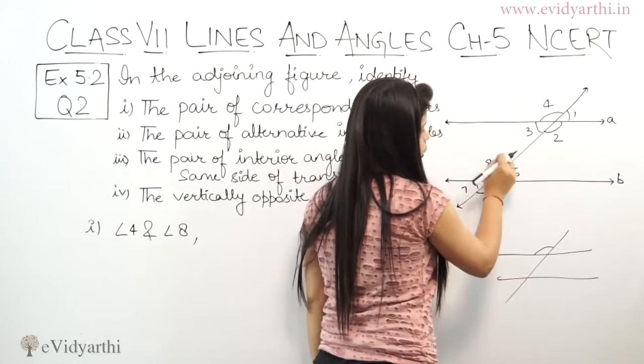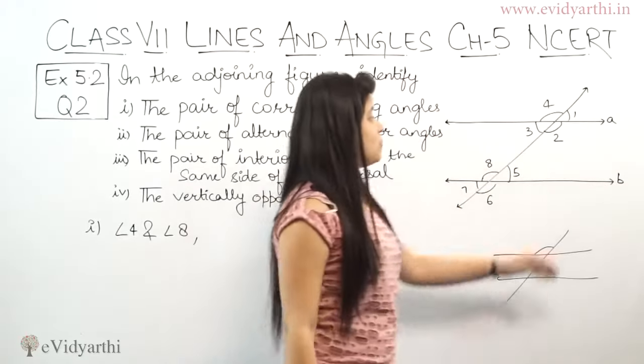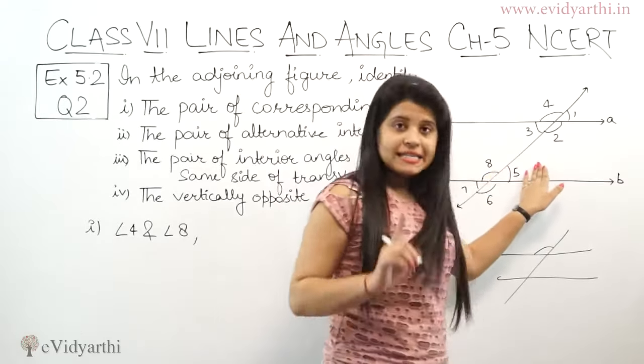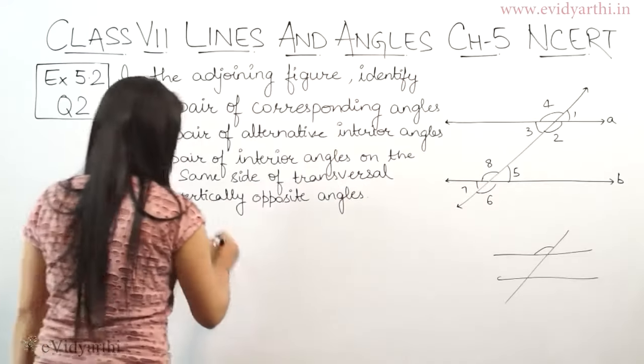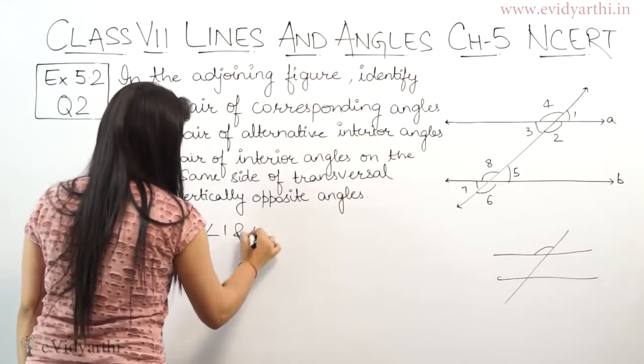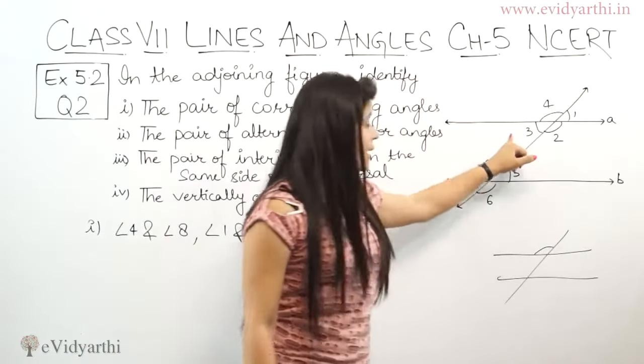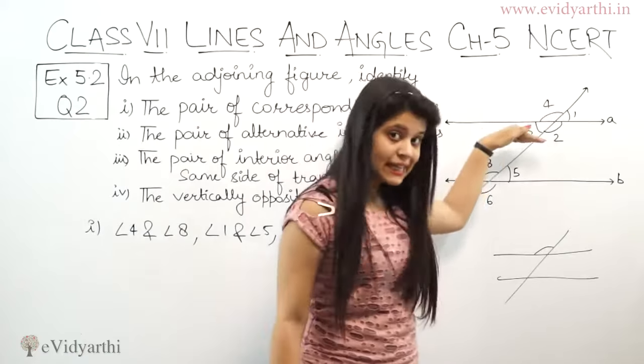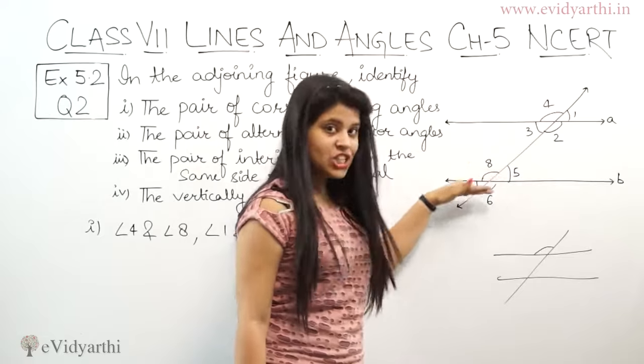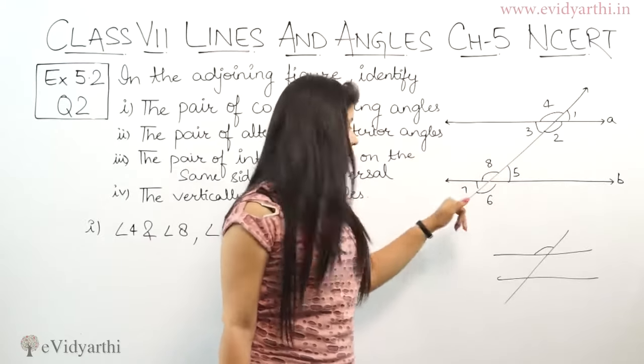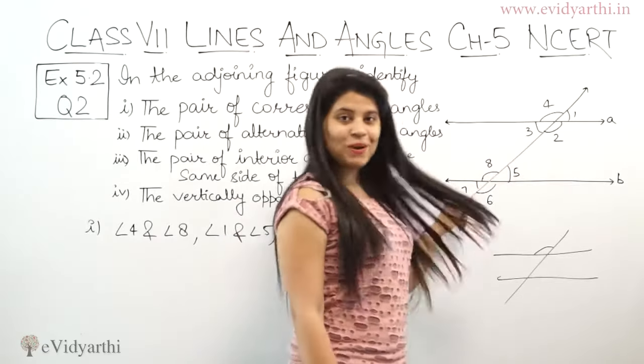Angle 1 and angle 5. Next we have angle 3, which is below the parallel line on this side of the transversal. Here, below the parallel line and on this side of the transversal we have angle number 7. So 3 and 7 are corresponding angles. Angle 3 and angle 7.